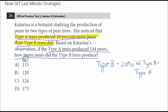This is a back-solving strategy. We're going to take 20% of each answer choice one at a time. 0.20 times 115 is 23 — and remember, you do have your calculator here. If we add that 20% of type B, we get 138 for type A, but the question says type A produced 144 pears, so that's not right.